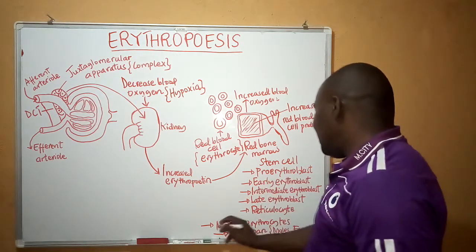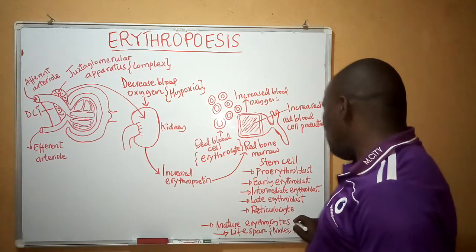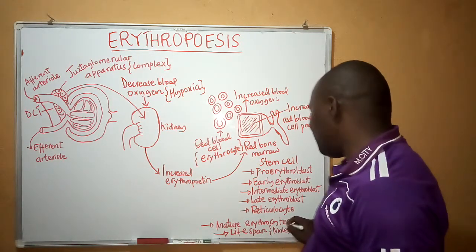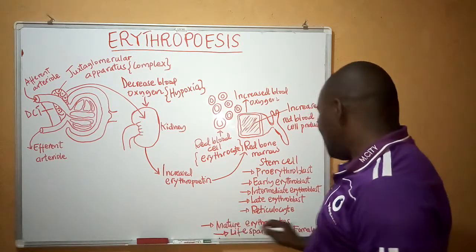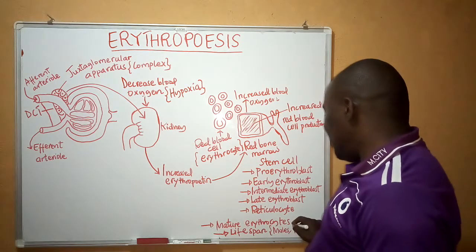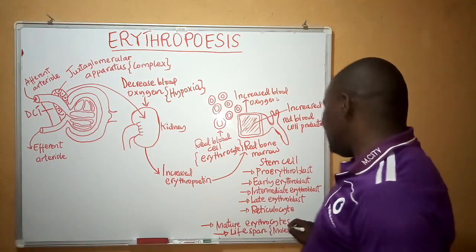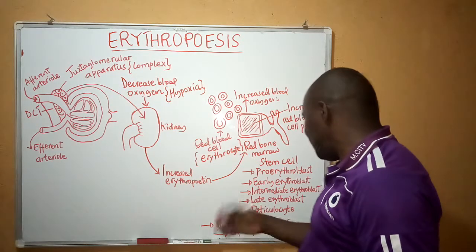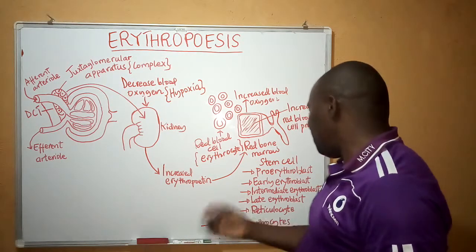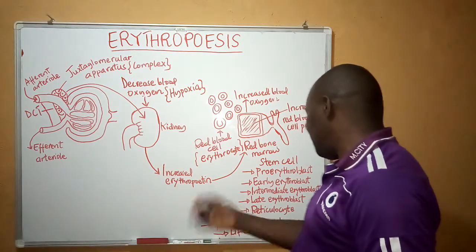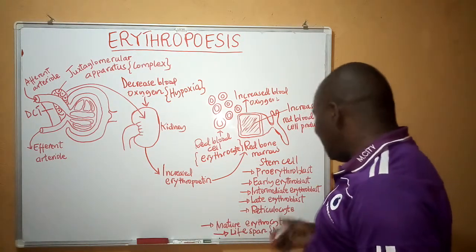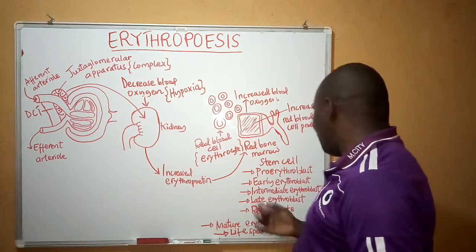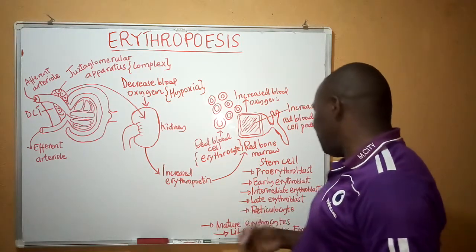After the nucleus is expelled, a macrophage type of white blood cell will engulf that nucleus. From that state, we obtain mature red blood cells or mature erythrocytes.